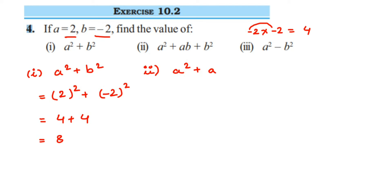So 8 is the answer for the first question. The second one is a squared plus ab plus b squared. a value is 2, so 2 squared, plus ab which is a times b, so 2 times minus 2, plus b squared which is minus 2 squared.